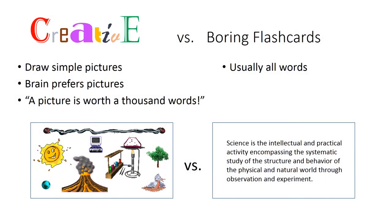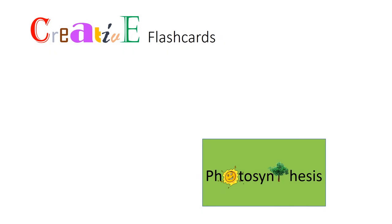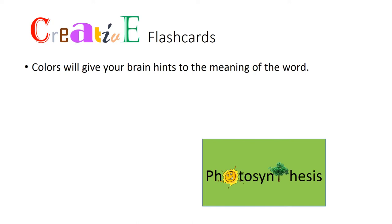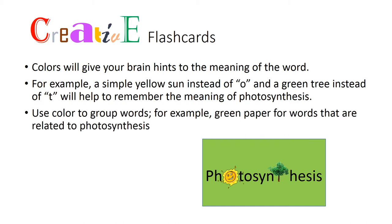Creative flashcards: draw simple pictures because the brain prefers pictures — a picture is worth a thousand words. Use different color pens and color paper, as colors will give your brain hints to the meaning of the word. For example, a simple yellow sun instead of the letter O and a green tree instead of the letter T will help to remember the meaning of photosynthesis. Also use color to group words; for example, green paper for words related to photosynthesis.